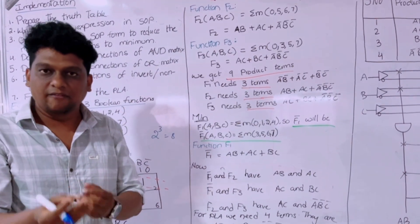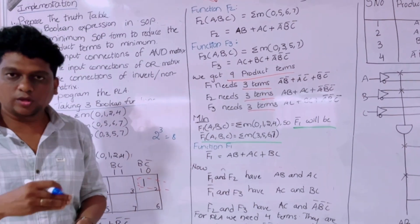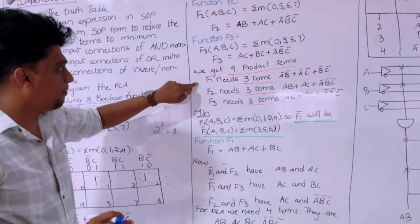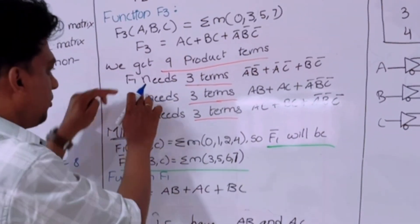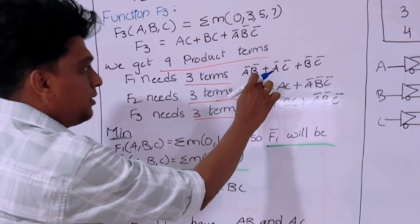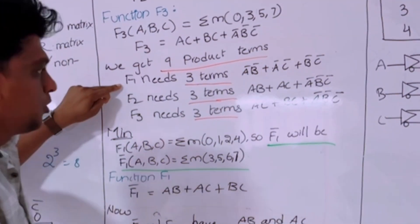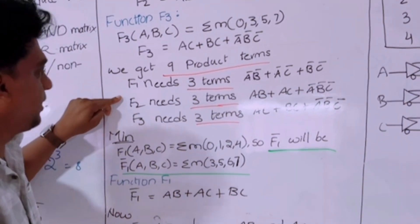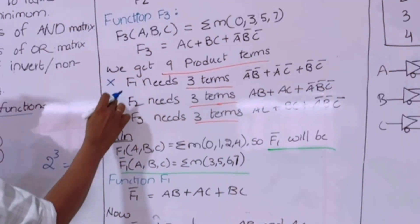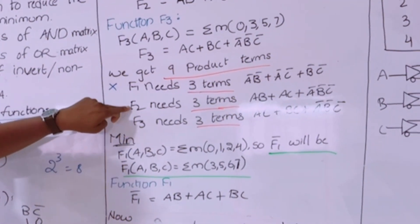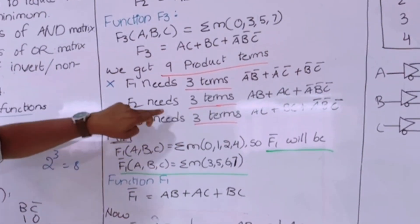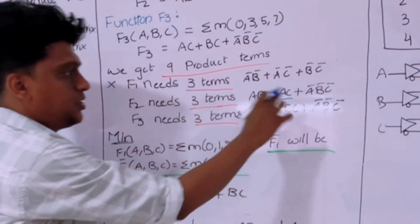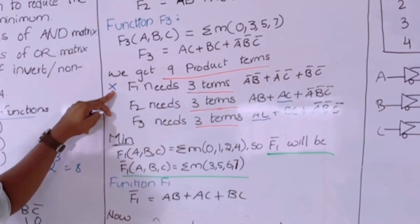Whenever there is a common variable, we have to remove it — if it occurs more than once, we write it only once. Now comparing F1 with F2 first: there are no common terms among F1 and F2. Then comparing F1 and F3: there are also no common terms. So F1 does not have any common terms with F2 or F3. Now comparing F2 and F3, we find the common term AC. But for F1 there are no common terms.